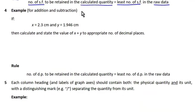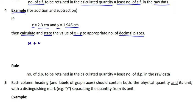Let's learn the next rule with another example. If x = 2.3 centimeters and y = 1.964 centimeters, calculate and state the value of x + y to the appropriate number of decimal places. x + y = 2.3 + 1.946 = 4.246 centimeters.